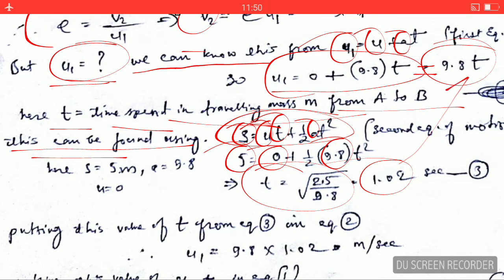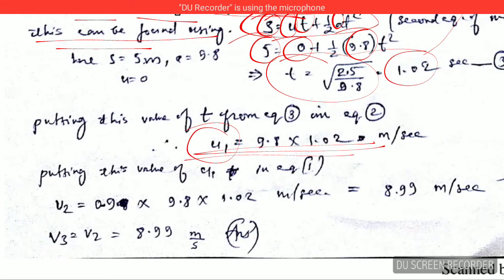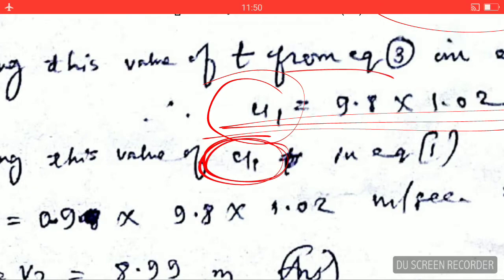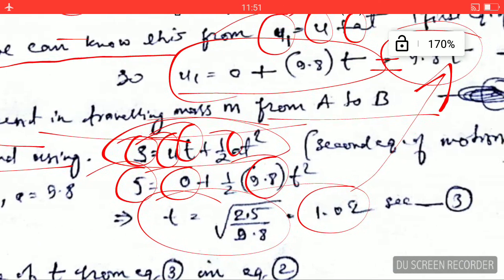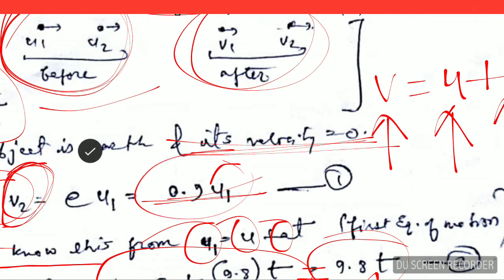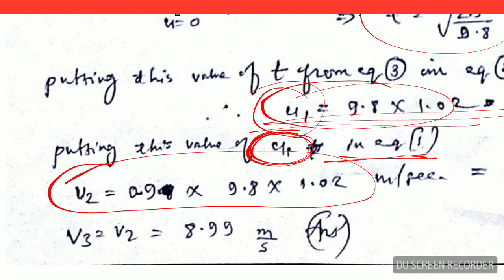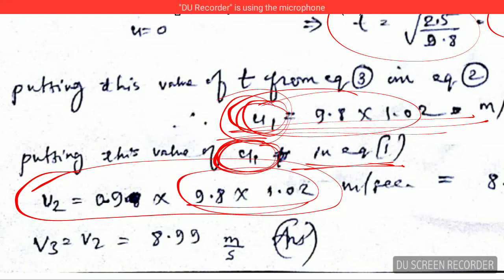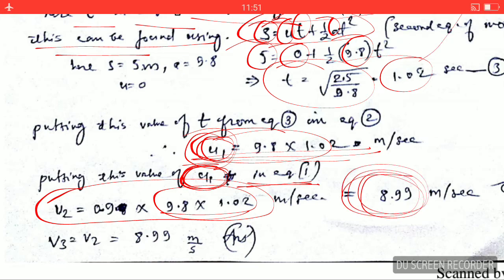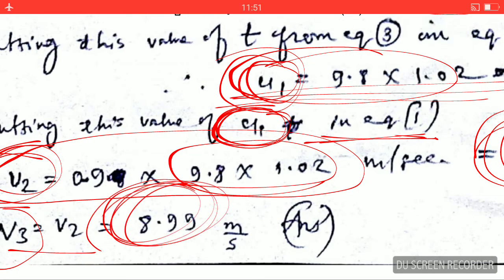Let's put this value of U1 back into equation 1, where we were trying to find V2. Substituting the value of U1, we can solve to get the value of V2. And as I already told you, V2 equals V3 — which is the velocity on striking the ground the second time. So this is our final answer.